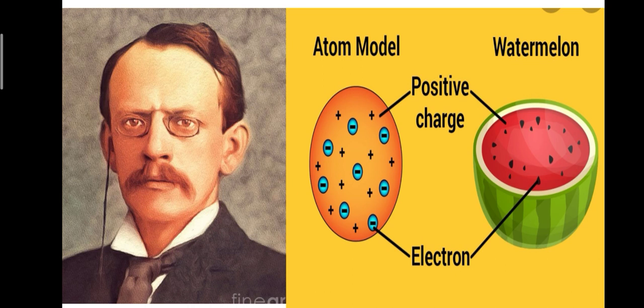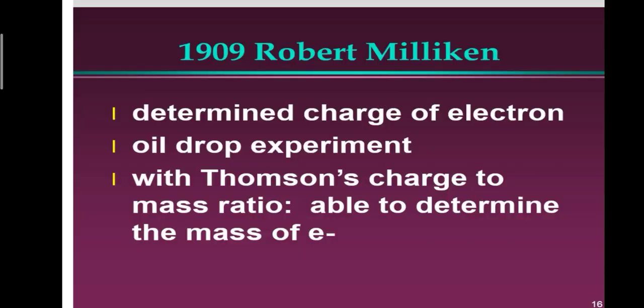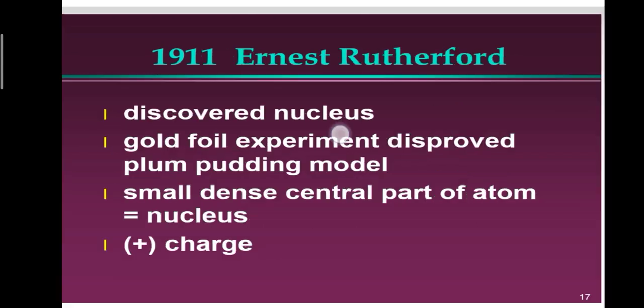The study of the atom was a chain of scientists working on different aspects. Thomson's model lacked clear clarification of how charges were distributed. In 1909, Robert Millikan determined the charge of the electron using the oil drop experiment, and combined with Thomson's charge-to-mass ratio, the mass of the electron could also be determined.